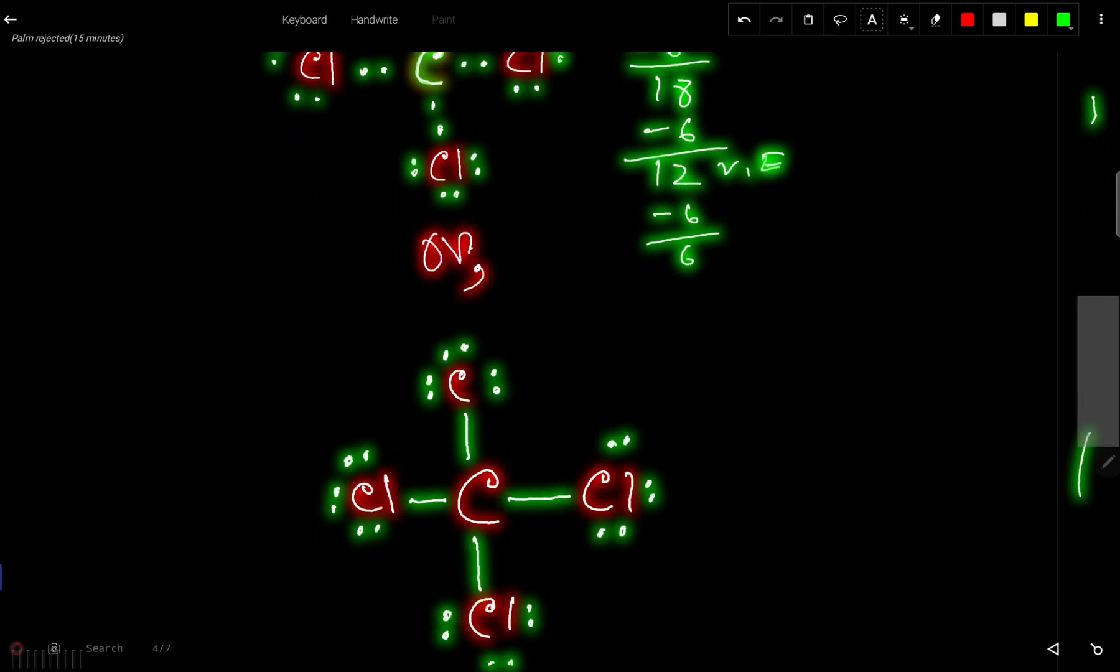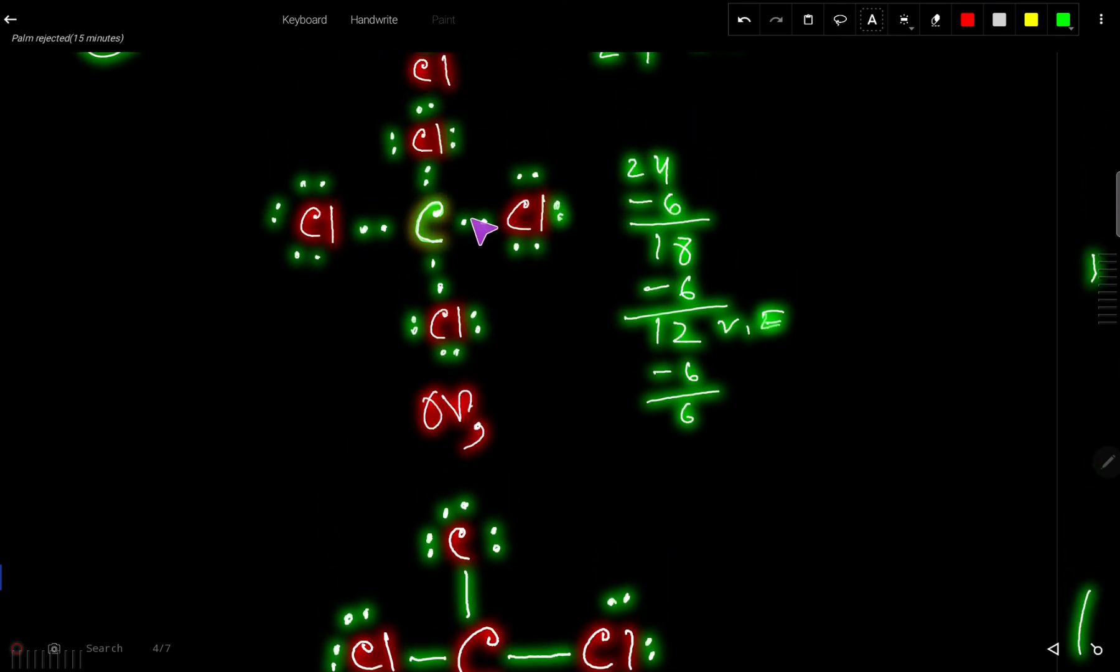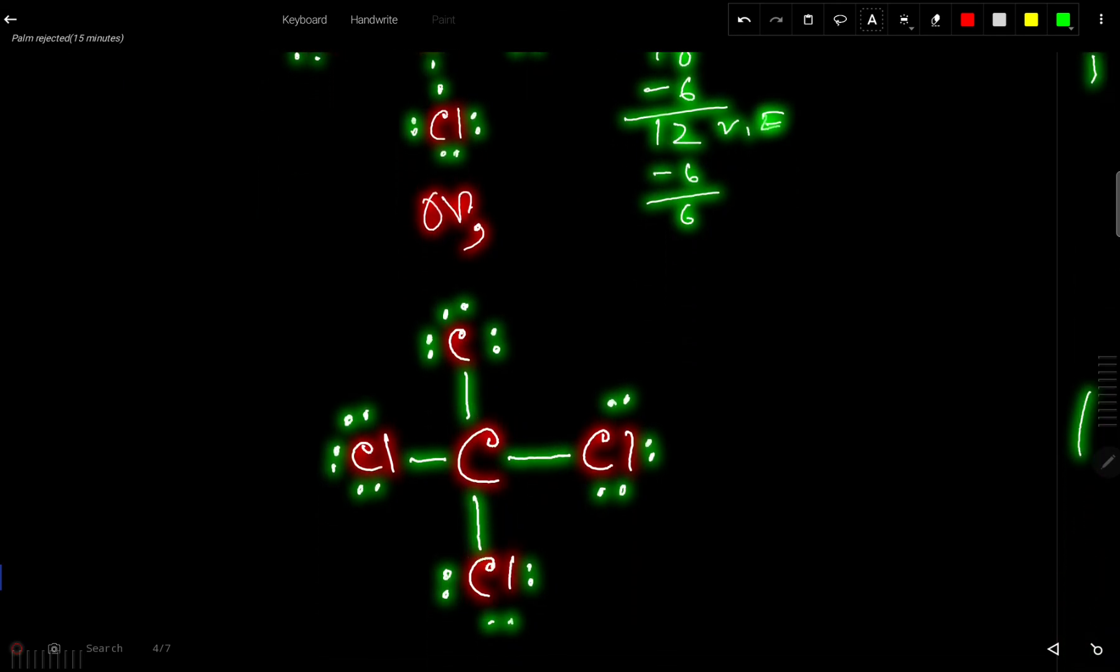We will use dash for bond pairs. Look, here we have one, two, three, four, four bond pairs, and that is why we have used here one, two, three, four, four dashes. We can express bond pair as dash. So what is the Lewis structure of CCl4? This or this.